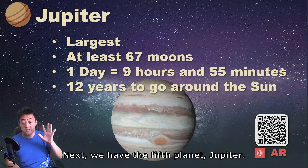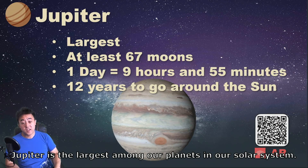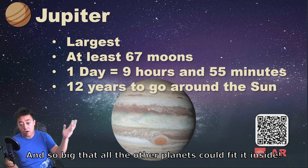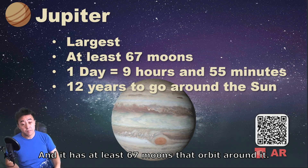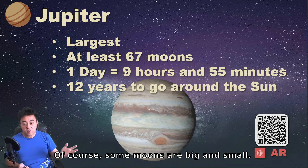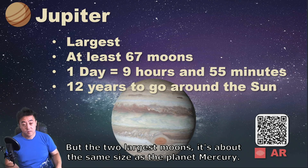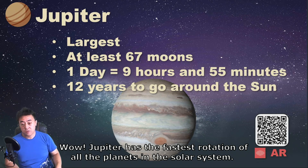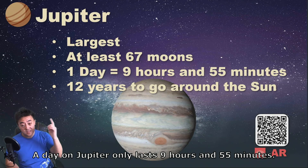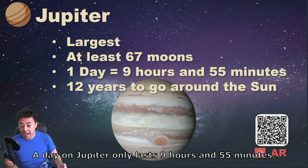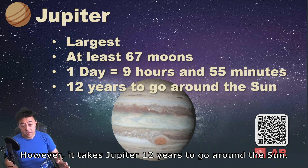Next, we have the fifth planet: Jupiter. Jupiter is the largest planet in our solar system, and it's so big that all the other planets could fit inside. It has at least 67 moons that orbit around it — some are big and some are small, but the two largest moons are about the same size as the planet Mercury. Jupiter has the fastest rotation of all the planets. A day on Jupiter only lasts 9 hours and 55 minutes. However, it takes Jupiter 12 years to go around the sun.